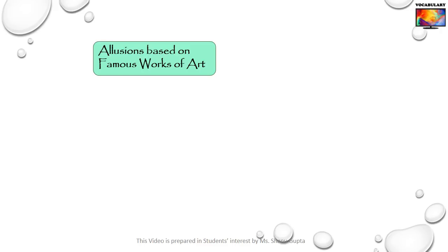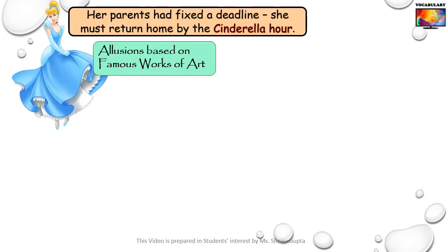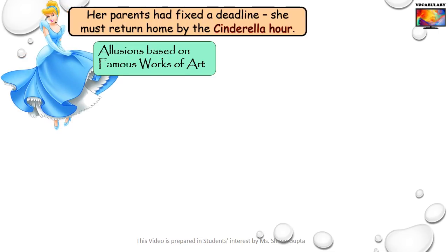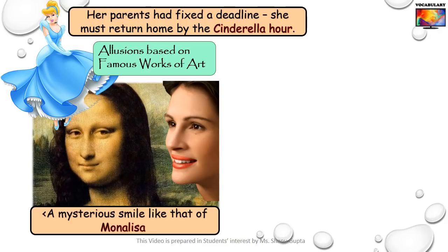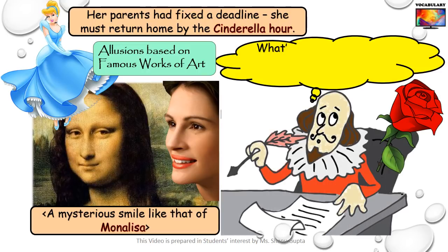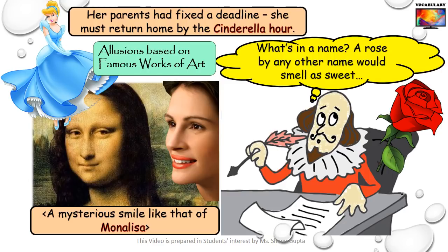Some allusions are based on fairy tales and famous works of art. For example: 'Her parents had fixed a deadline. She must return home by the Cinderella hour.' The allusion is to the fairy tale of Cinderella and her 12 o'clock deadline. Or if you say that she has a mysterious smile like that of Mona Lisa, you are making an allusion — albeit a direct one — to the famous painting by Leonardo da Vinci. Some sayings from literary works are also quite well known. For instance: 'What's in a name? A rose by any other name would smell as sweet' — an often-quoted line from Shakespeare's play Romeo and Juliet. Again, an allusion.